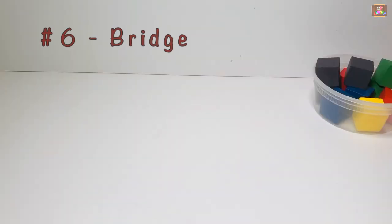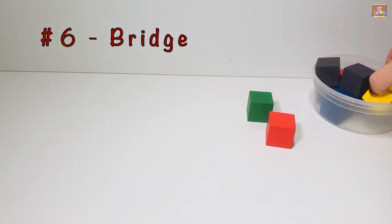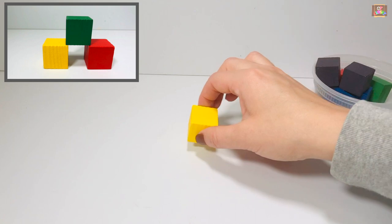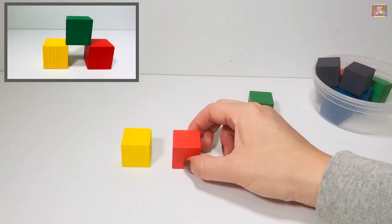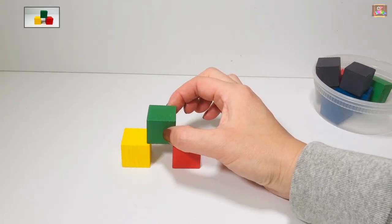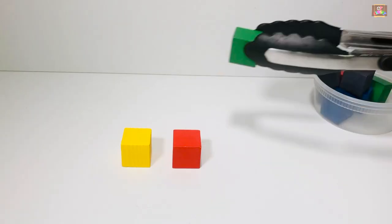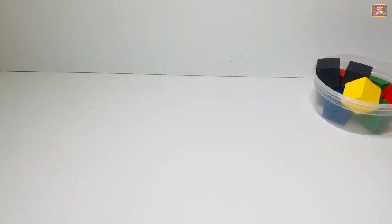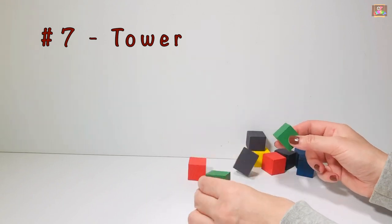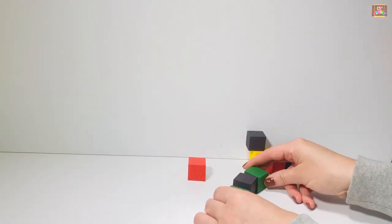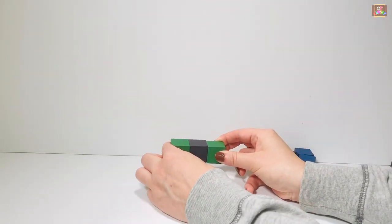Count three blocks to make a bridge. Bye-bye bridge. For game number seven, get 10 blocks to build the tower. Pick up one block in each hand and squeeze the third one in between. Try to stack them without...